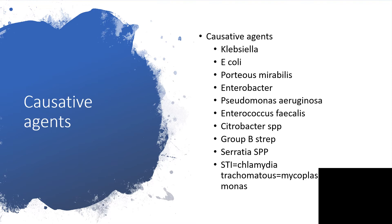So we've gone through the different situations under which complicated urinary tract infection could be diagnosed. What are the possible causative agents? We have Klebsiella, Escherichia coli, Proteus mirabilis, Enterobacter, Pseudomonas aeruginosa, Enterococcus faecalis, Citrobacter species, Group B Streptococcus, Serratia species, and sexually transmitted infections like Chlamydia trachomatis, Mycoplasma, and Trichomonas.